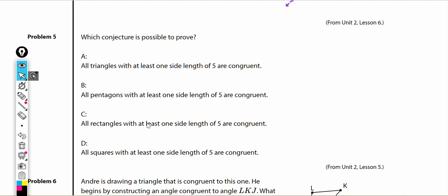Now let's look at problem number 5. Which conjecture is possible to prove? A conjecture is a mathematical statement that we're not sure if it's true yet. A. All triangles with at least one side length of 5 are congruent. Let me see if I can come up with an example. That has one side length of 5, that has one side length of 5. They are not congruent. Cross it out.